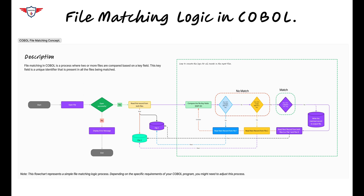The first possibility is that file two's key is greater than file one's key. In this case, you're going to read the next record from file one only. The second possibility is that file two's key is less than file one's key. In that case, you have to read the next record from file two only. You should always remember that this comparison logic has to be implemented in a loop so that it is executed for all records present in the input file. For the loop, you can use an inline PERFORM statement, a PERFORM UNTIL statement, or any other variant of the PERFORM statement as per your business requirement.